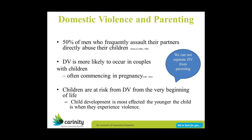When talking about domestic violence and parenting, half of the men who use physical assault against their partners will also physically assault their children. Domestic violence often occurs in pregnancy and is more likely to occur in couples with children. So children are actually at risk of domestic violence from the very beginning of life — in utero as well, not just when they're born. Domestic violence has a really profound impact on the fetus. Children are more vulnerable the younger they are at the age of the trauma, and the cumulative harm is the biggest risk factor.